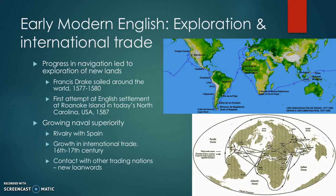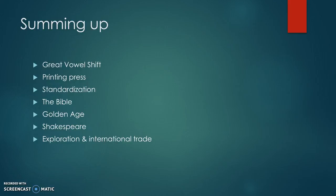To sum up, the important events in early modern English were: the Great Vowel Shift, where pronunciation changed a lot; the invention of the printing press, making books cheaper and more easily available; standardization in spelling due to books, newspapers, and dictionaries; a new Bible translation; the golden age of English literature including William Shakespeare; and changes to the English language brought about by exploration and international trade.